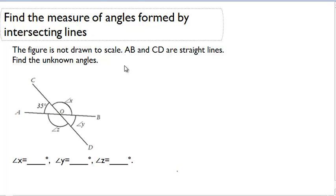We are going to find the measure of angles formed by intersecting lines. The figure below is not drawn to scale. A, B, and C, D are straight lines. Find the unknown angles.